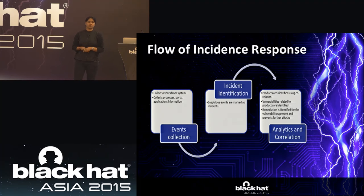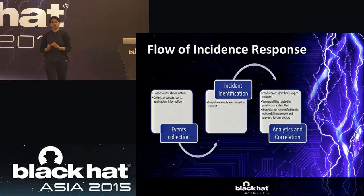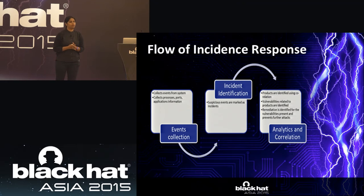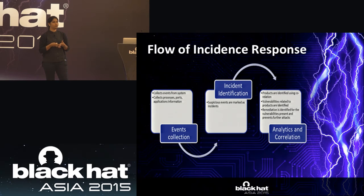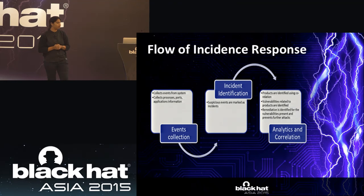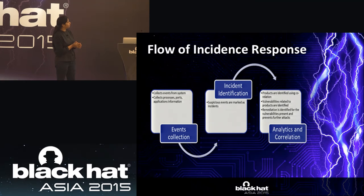The flow of incident response: you collect all events you are interested in — ports, processes, files, registries. Not all events are important; millions happen. Incident identification flags suspicious activity because an administrator has written rules or something unexpected occurs, like a strange EXE starting to run. You feed it to the analytics and correlation engine, identify that the product is vulnerable, determine the remediation, fix it, and prevent further attacks.